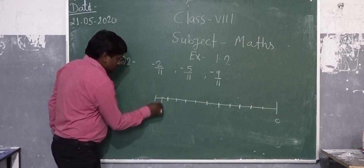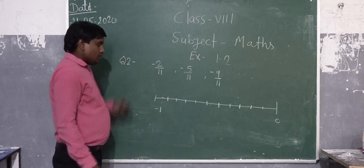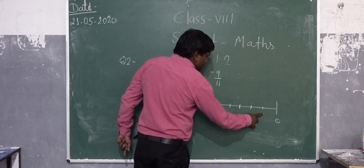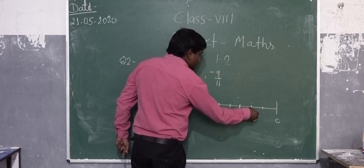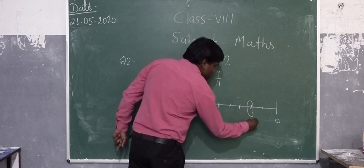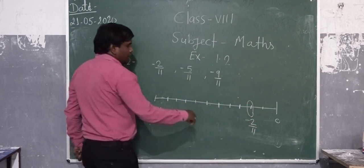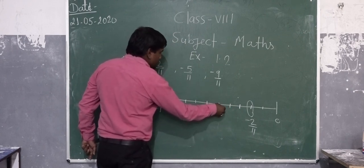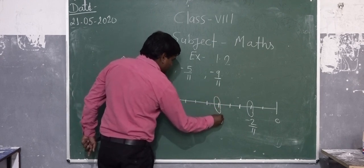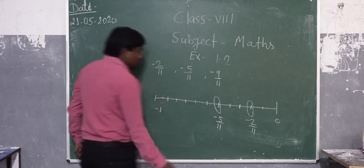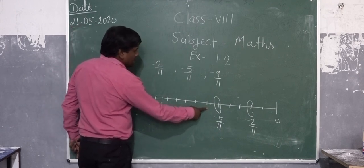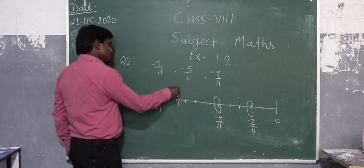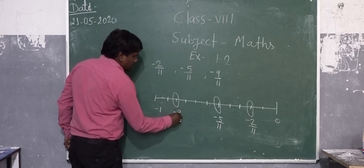We divide this line into equal parts and start from here. This is minus 1 by 11, this is minus 2 by 11. We have to represent minus 2 by 11, so this is minus 2 by 11. After this, minus 3 by 11, minus 4 by 11, and this one is minus 5 by 11. Next: minus 6 by 11, minus 7 by 11, minus 8 by 11, and this number is minus 9 by 11.